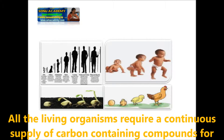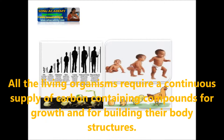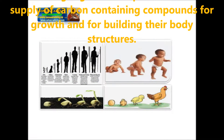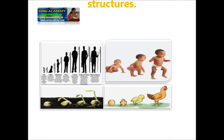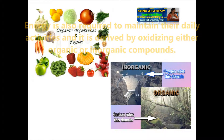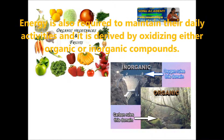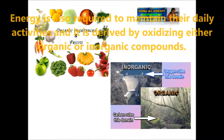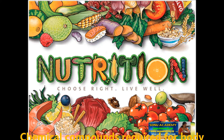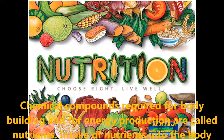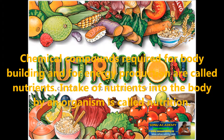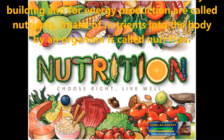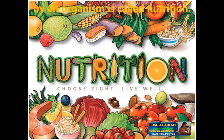All living organisms require a continuous supply of carbon-containing compounds for growth and for building their body structures. Energy is also required to maintain their daily activities and it is derived by oxidizing either organic or inorganic compounds. Such chemical compounds required for body building and for energy production are called nutrients. Intake of nutrients into the body by an organism is called nutrition.